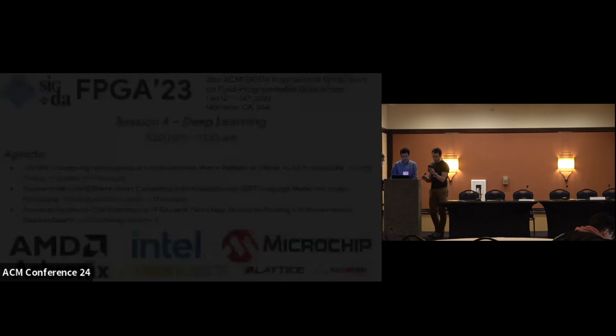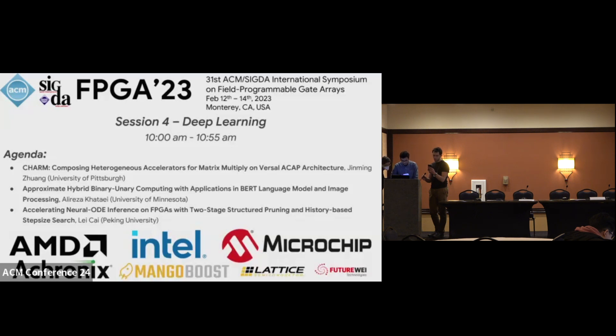Our next speaker is Ali Reza Katai, and he'll be presenting a paper called Approximate Hybrid Binary Unary Computing with Applications in BERT Language Model and Image Processing. Ali Reza received his B.S. degree in Electrical Engineering from Amir Akbar University of Technology, Tehran Polytechnic in Tehran, Iran in 2021. He is currently a graduate student with the Department of Electrical and Computer Engineering at the University of Minnesota in Minneapolis. His current research focuses on hardware accelerator design for compute-intensive applications using Approximate and Unary Computing.